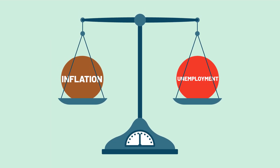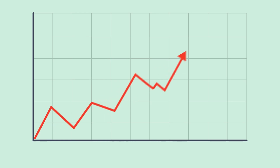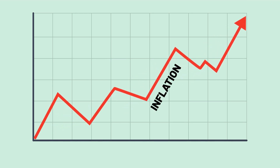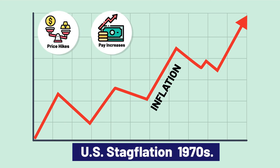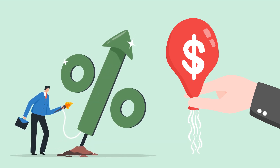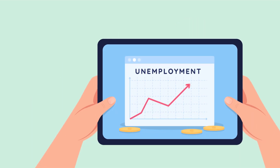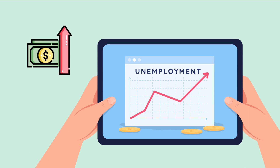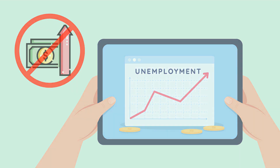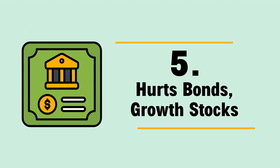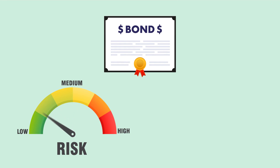Fourth, high inflation can cause painful recessions. Prolonged acceptance of higher inflation to protect jobs may cause inflation expectations to rise, setting off an inflationary spiral of price hikes and pay increases — as happened during the U.S. stagflation of the 1970s. To regain credibility, the Federal Reserve was forced to raise interest rates much higher and keep them high longer, causing unemployment to soar for longer than would otherwise have been necessary.